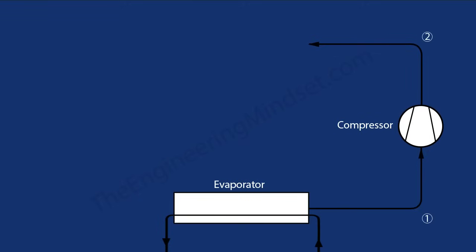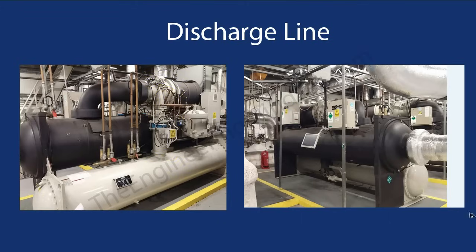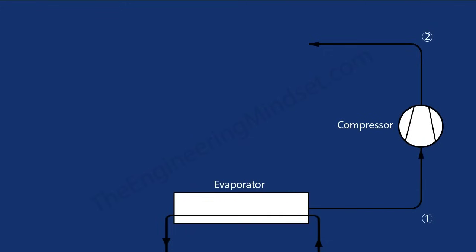As the refrigerant leaves the compressor it heads towards the condenser via what's known as the discharge line, which we'll refer to as Point 2 on the graphs. The discharge line is this pipe coming out of the compressor and heading down into the condenser. There's an isolating valve here so you can contain the refrigerant inside if you ever need to remove the compressor for maintenance.